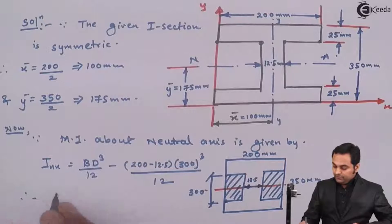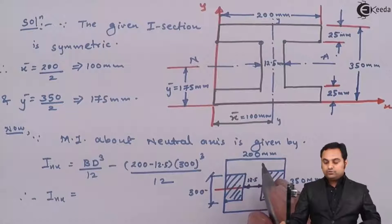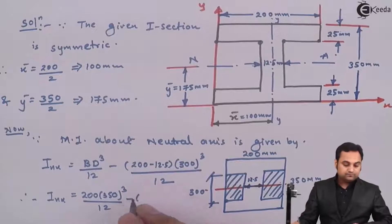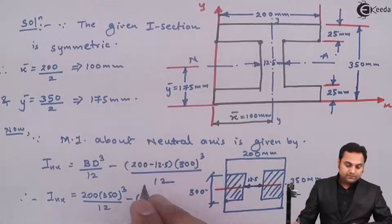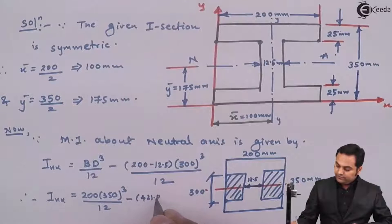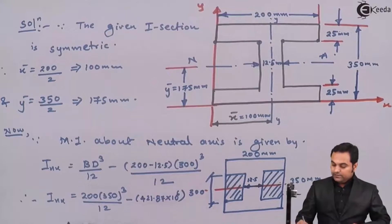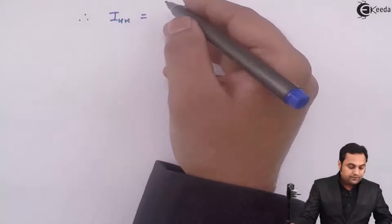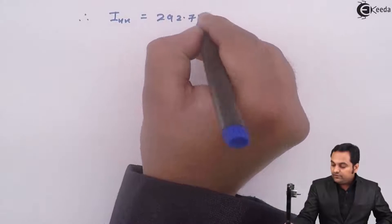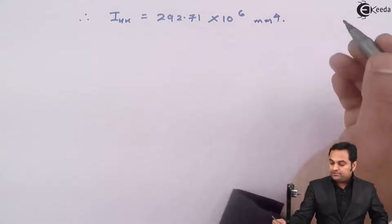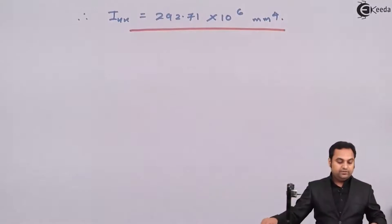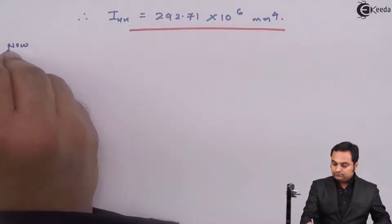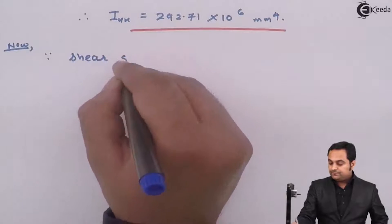Putting the values: the complete rectangle gives 200 × 350³/12, and subtracting gives 421.87 × 10⁶. The final value of Ixx comes out to be 292.71 × 10⁶ mm⁴.